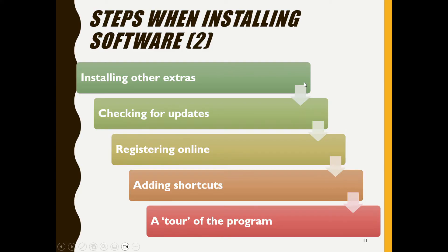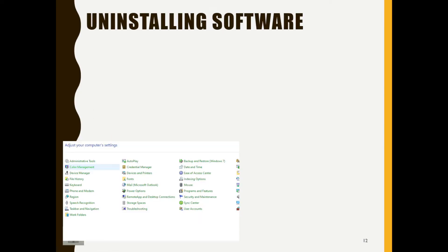With a custom installation, you might be installing extra components. You may also need to check for updates after installing — for example, with Fortnite, you install the game and then run an update on the installation. Some software requires you to register online. Shortcuts are added, and usually when you open a new piece of software, it takes you through a tour to show you where various things are.